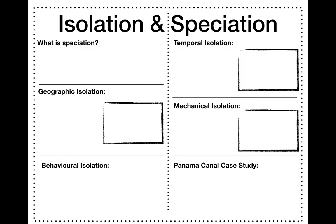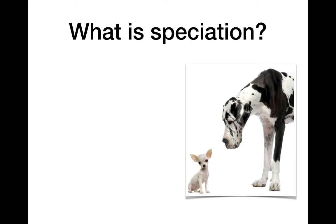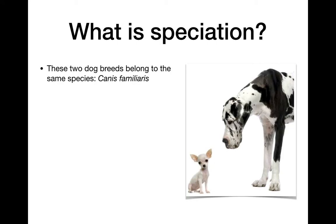So first things first — what is speciation? These two dogs, a Chihuahua and a Great Dane, belong to the same species: Canis familiaris. For species names — for example, humans are Homo sapiens — they have two parts: the genus name, which is always capitalized, and the species name, which is lowercase. When you type a scientific name you put it in italics, and when you write it by hand you underline it, so make sure you underline this in your notebook.